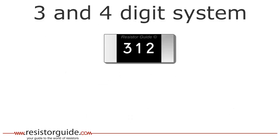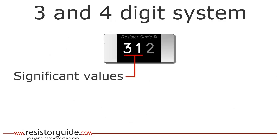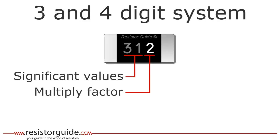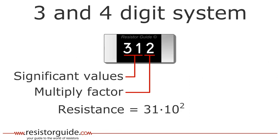Let's take an example of a 3 digit code. The first two digits represent the significant values of the resistance, and the third digit represents a power of 10 multiply factor. The resistance value is therefore 31 times 10 to the power of 2, which leads to 3100 ohms.